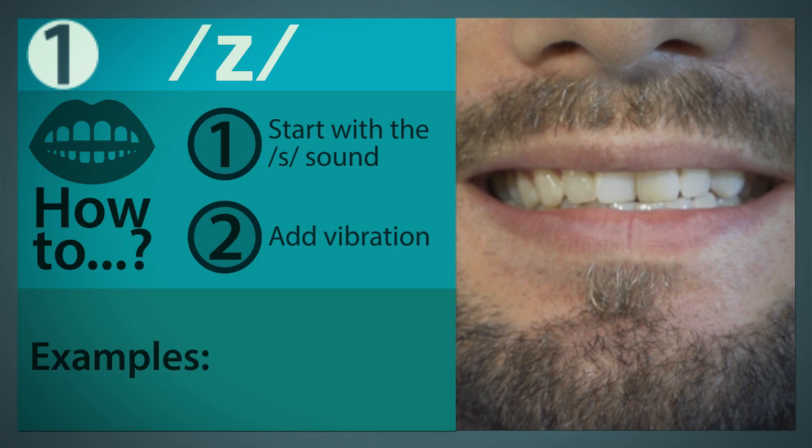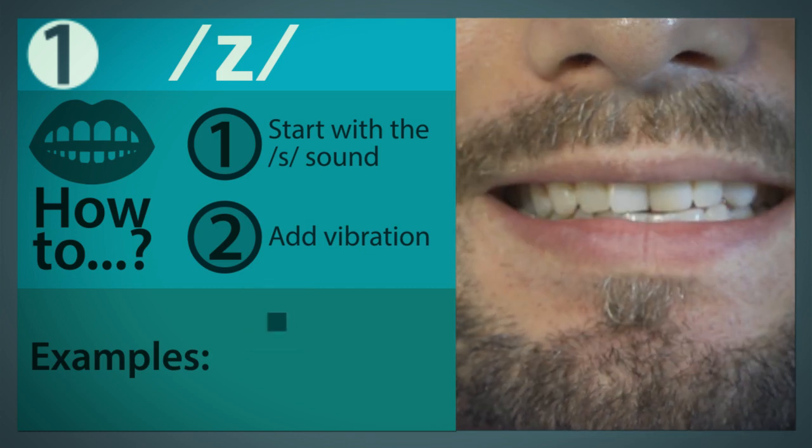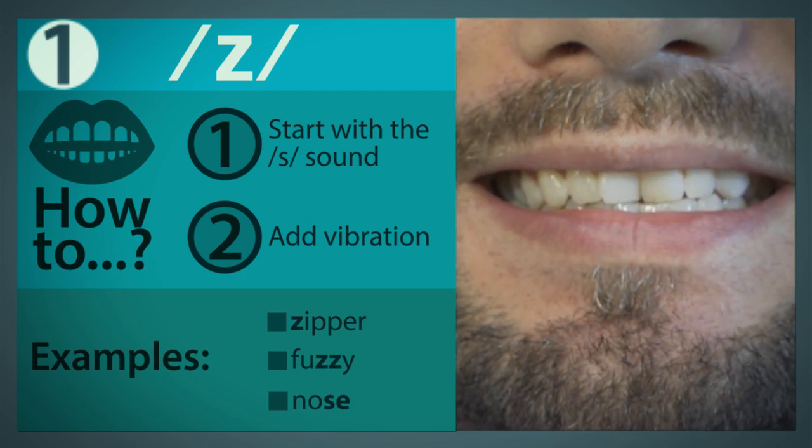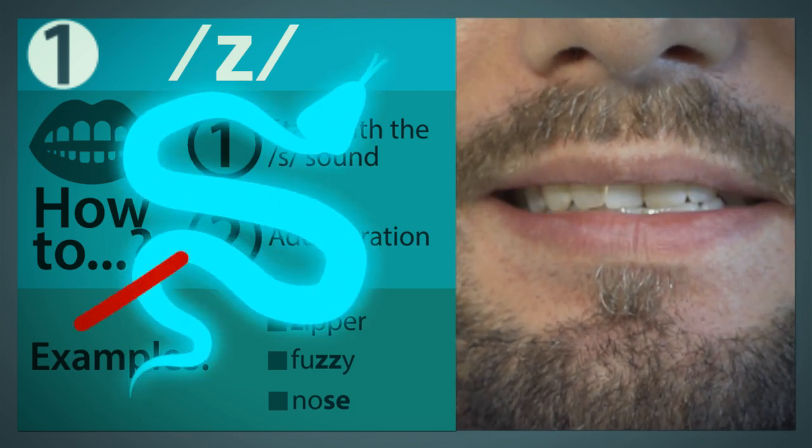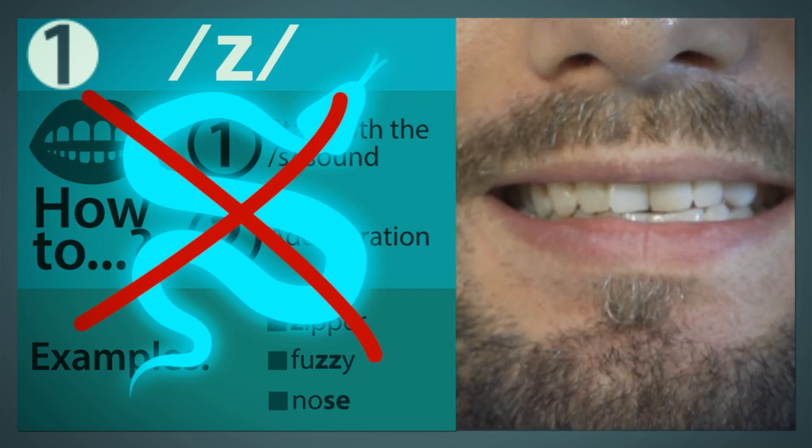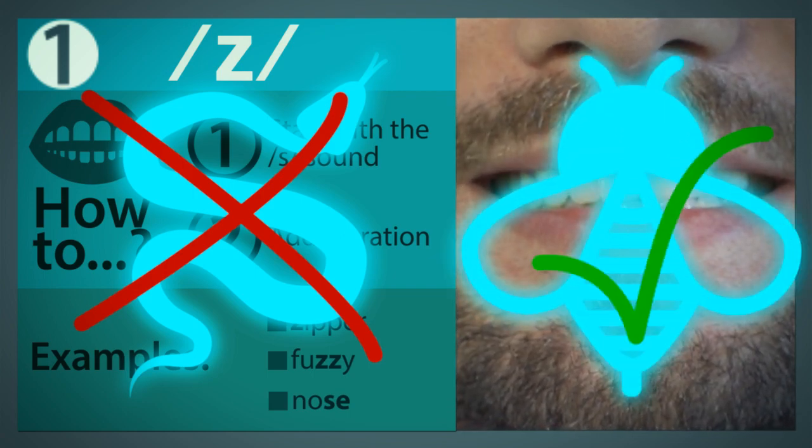We see this phoneme in many English words such as zipper, fuzzy, and nose. Note, for this phoneme, we do not want any hissing snake sounds. Instead, you need to make a sound like a buzzing bee.